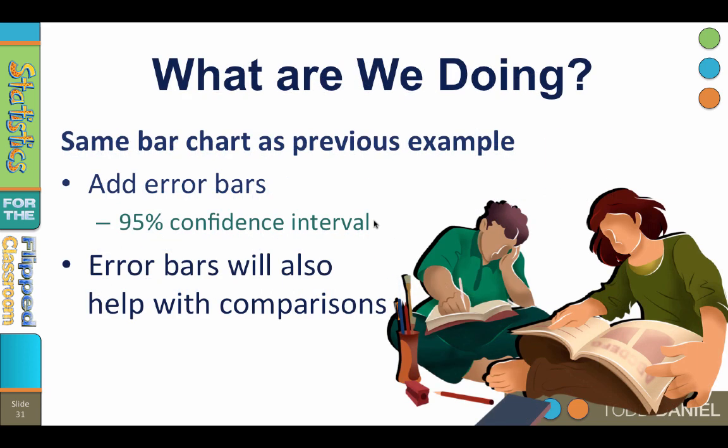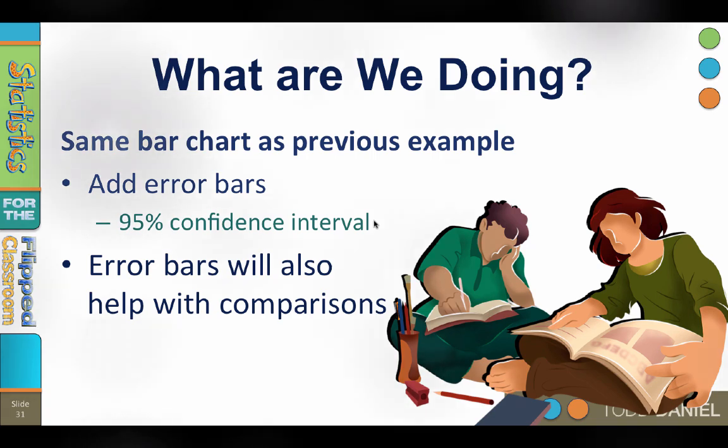Continuing with our previous example, we will recreate the same bar chart, this time adding error bars that show the 95% confidence interval. The 95% confidence interval is a range of possible mean values that will contain the true mean 95% of the time. It is not as precise as an individual single mean, but the range of scores is more accurate in that it is much more likely to contain the true mean.